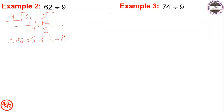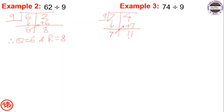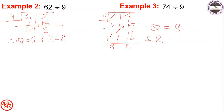Next example: 74 divided by 9. Divide 7 and 4 into two parts, draw the horizontal line, write 7 below 7. Now add this 7 to the right digit: 4 plus 7 is 11. Since 11 is greater than 9, the remainder is greater than the divisor. So we subtract 9 and add 1 to the quotient: 7 plus 1 is 8, and 11 minus 9 is 2. Therefore quotient equals 8 and remainder equals 2.